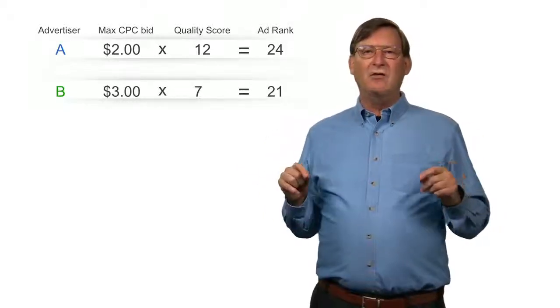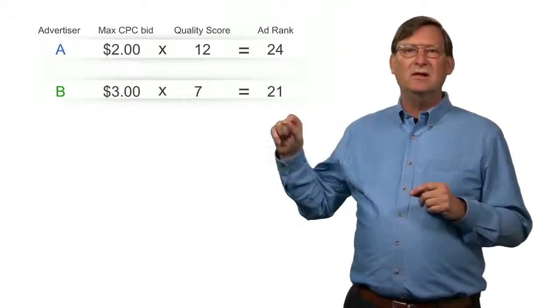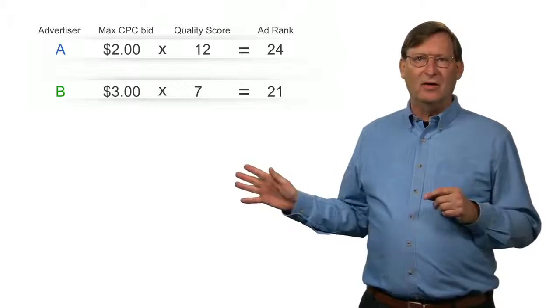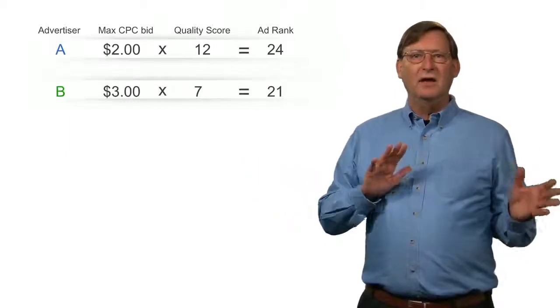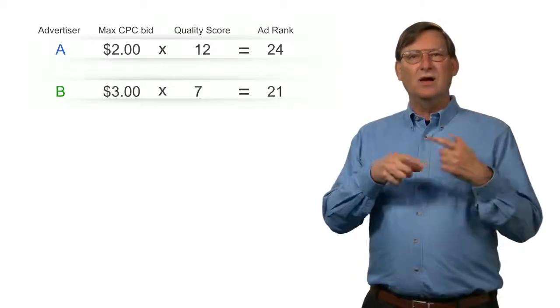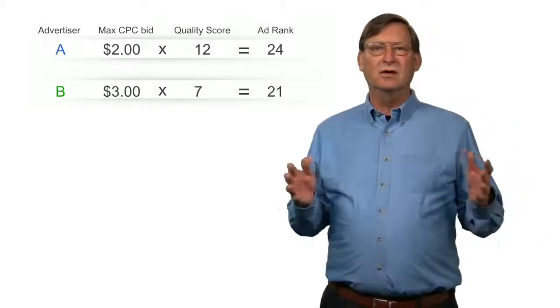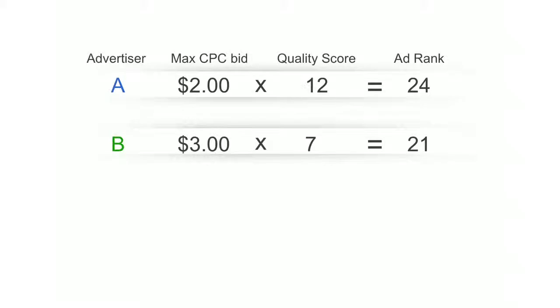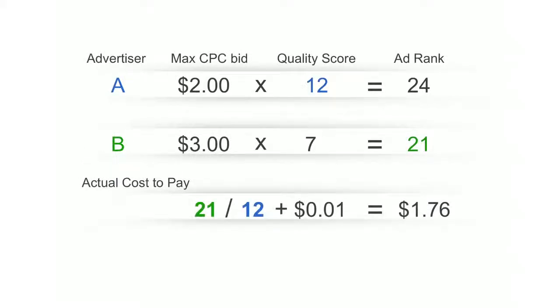But to determine the price that advertiser A will pay, we take the next highest ad rank, that's advertiser B's ad rank, and divide through by the quality score of advertiser A, then round up to the nearest minimal currency unit in the advertiser's country. So here, we'll assume the advertisers are located in the U.S., so we'll just add a cent. So as a result, if a user clicks on advertiser A's ad, he'll pay $1.76. This amount is then divided between the publisher and Google.